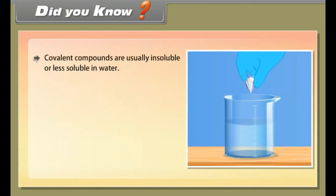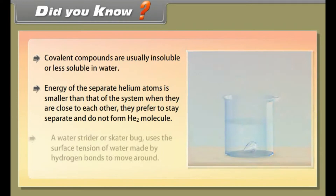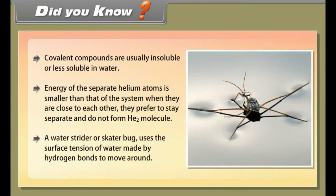Did you know? Covalent compounds are usually insoluble or less soluble in water. The energy of separate helium atoms is smaller than that of the system when they are close together, so they prefer to stay separate and do not form He2 molecules. A water strider or skater bug uses the surface tension of water, created by hydrogen bonds, to move around.